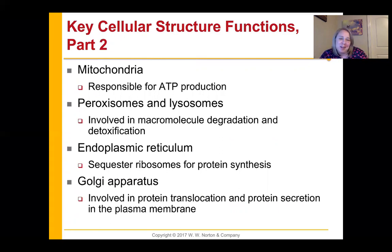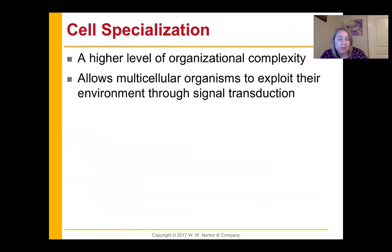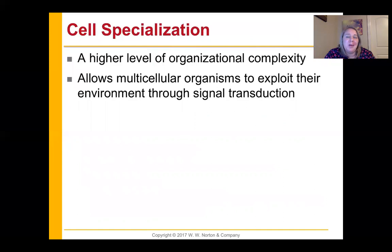The endoplasmic reticulum sequesters ribosomes for protein synthesis. The Golgi is involved in protein movement and protein secretion — sending proteins where they need to go. Because we are multicellular, we get to specialize, which gives us higher complexity. We can exploit our environment through signal transduction. The textbook discusses how we think eukaryotes evolved: one cell essentially engulfed another cell, which continued to survive inside in a symbiotic relationship — producing energy and getting a nice home.